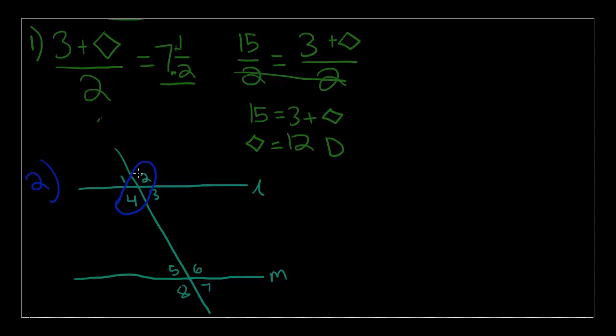But, 2 and 4 are obtuse angles, and the only other obtuse angle pair then should be angles 6 and 8. It should be if the lines are parallel, and that is the correct answer, choice D.